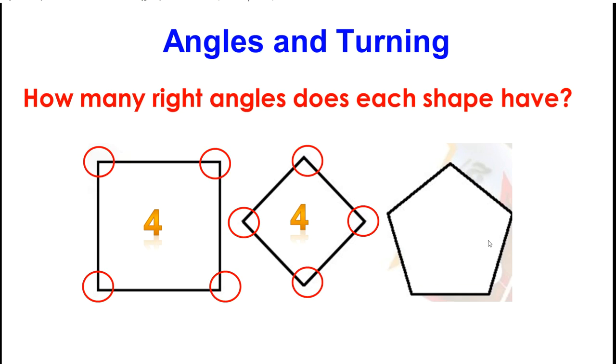And here we have got a pentagon. How many right angles do you think it has got? This is not right. This is not. This is bigger than a right angle. This is also bigger. So zero right angles.